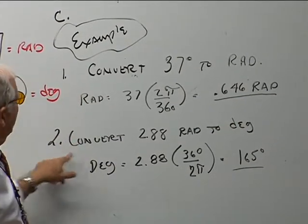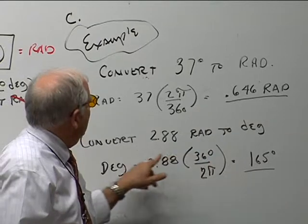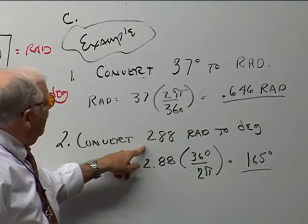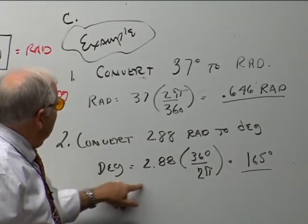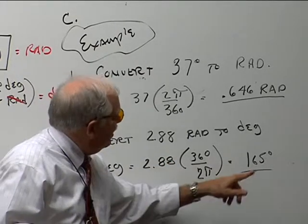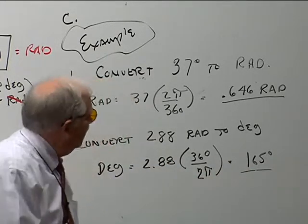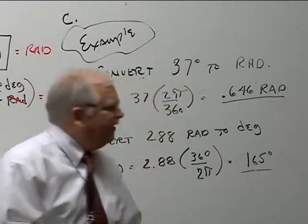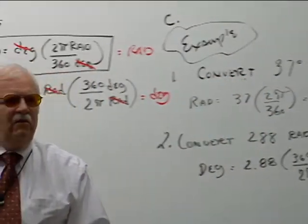And if I want to convert these rads to degrees, 2.88 rads to degrees, then degrees equals 2.88 times the quantity of 360 divided by 2π, and it leaves me with 165 degrees. So there you go.